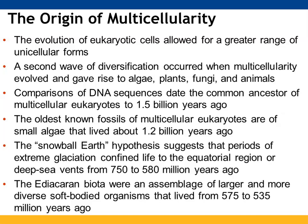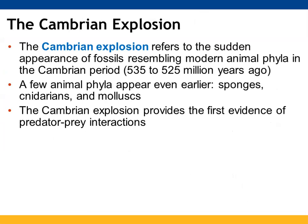The Ediacaran biota was an assemblage of larger and more diverse soft-bodied organisms that lived between 535 and 575 million years ago. When we start to see an abundance of fossils, these tend to appear around extinction events. The Cambrian explosion refers to the sudden appearance of fossils resembling modern animals between 525 and 535 million years ago. Some phyla appeared earlier, such as sponges, cnidarians, and mollusks. This was the first evidence of predator and prey interactions.